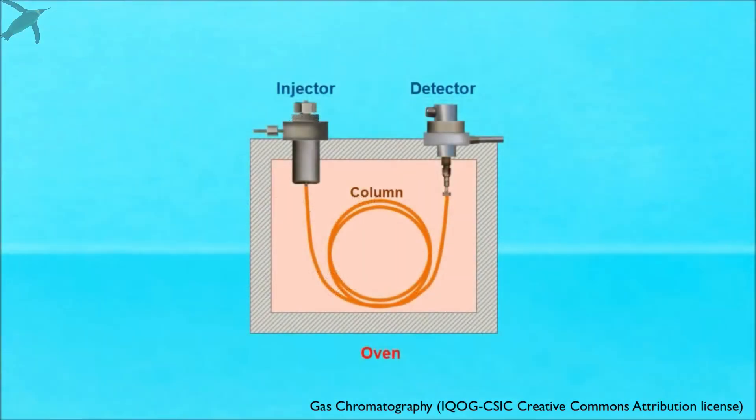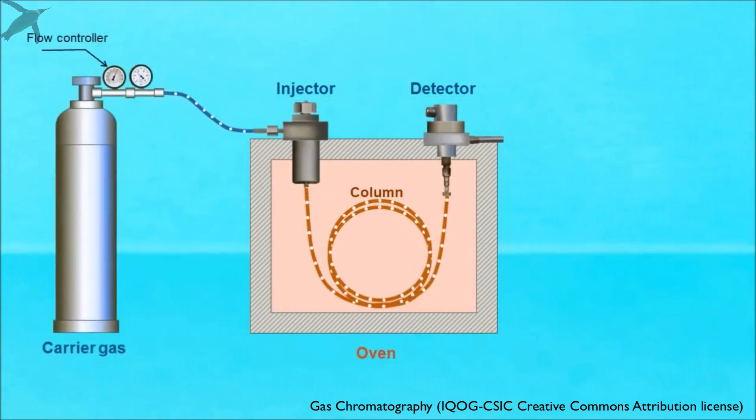The gas chromatograph is essentially a temperature-controlled oven that contains the column. At the beginning of the column, there's an injector, where you inject your sample via syringe, and at the end of the column, there's a detector that detects your peaks. Upstream of the injector, you have a tank of carrier gas, normally helium, that through a flow controller, provides a steady stream of carrier gas through the whole system.